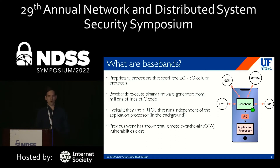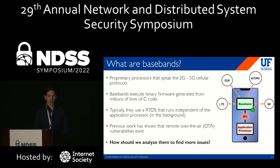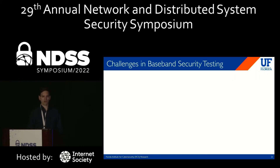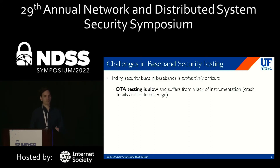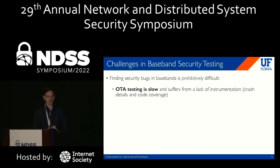Previous work has shown that remote over-the-air vulnerabilities do exist and have been exploited in the past. So if we were wanting to go out and figure out if there are additional remote vulnerabilities in our basebands, how would we go about doing that? There are a lot of challenges in doing so. If you were to set up a fake base station and put a fuzzer there and hit go, you'd realize there are a lot of problems: it's slow and it suffers from a lack of instrumentation on the target — the baseband running on a physical device — meaning crash details and code coverage.